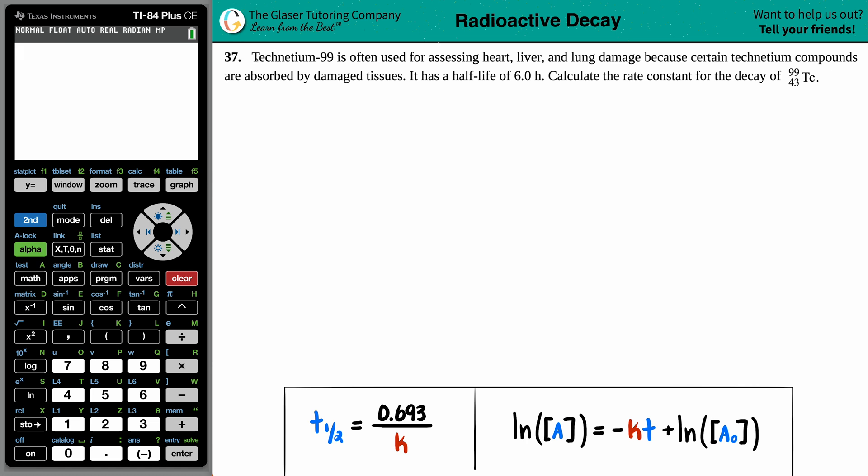Number 37. Technetium-99 is often used for assessing heart, liver, and lung damage because certain technetium compounds are absorbed by damaged tissues. It has a half-life of 6 hours. From that, we have to calculate the rate constant for the decay of technetium-99.